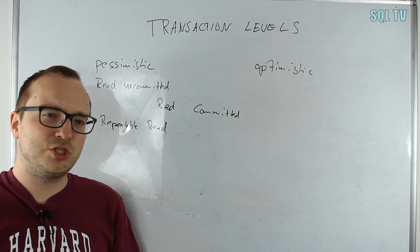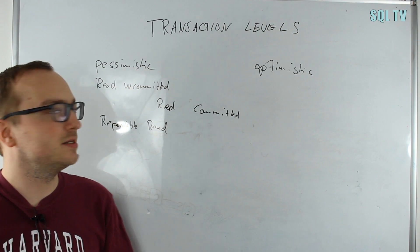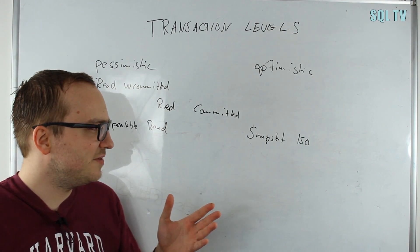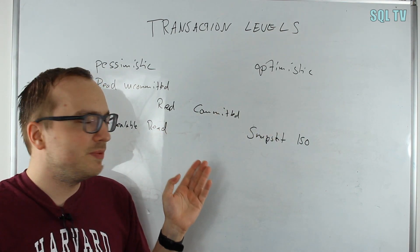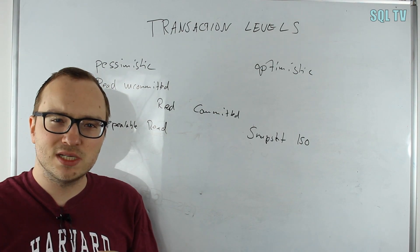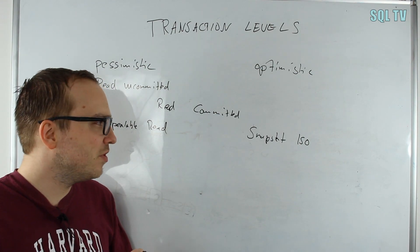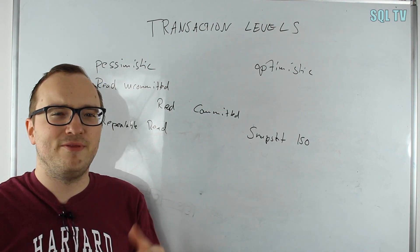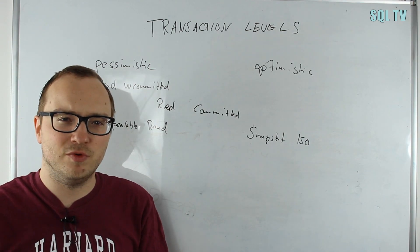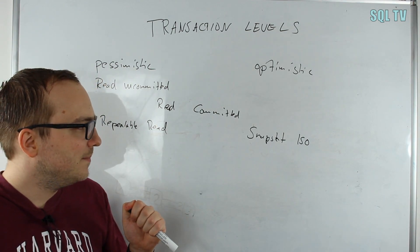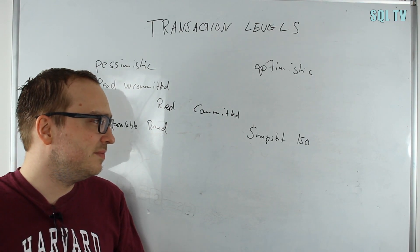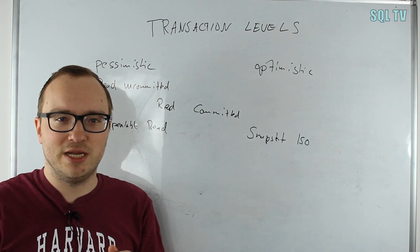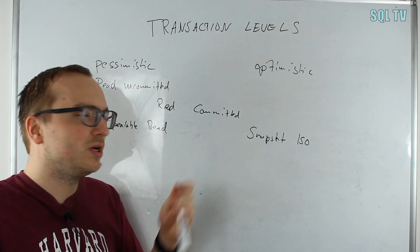The next one, very briefly, is snapshot isolation level, which is an optimistic one. The snapshot isolation level basically works like the optimistic read committed level. It stores old versions of the row so we can access them. The only difference between those is how old can that row be that I want to have stored in my row version store. I won't go into details because it's quite sophisticated stuff. Just keep in mind we have the snapshot isolation level, which is a little bit more strict than read committed.